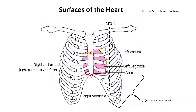The point of this is to know the surface anatomy of these surfaces. These are the most exposed surfaces and therefore most at risk of getting stab wounds — in particular, the anterior surface.